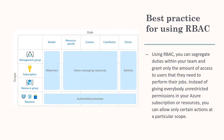Best practice for using RBAC: you can segregate duties within your team and grant only the amount of access to users that they need to perform their jobs. Instead of giving everybody unrestricted permissions in your Azure subscription or resources, you can allow only certain actions at a particular scope. For example, if someone wants to access a virtual machine, you can just give them read access so that they cannot make any changes.